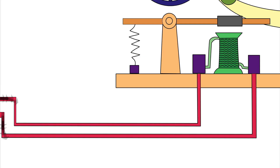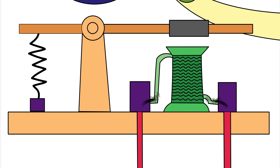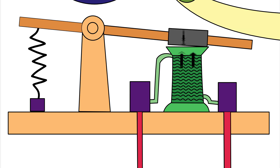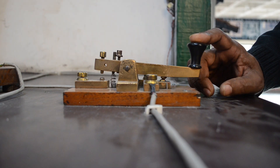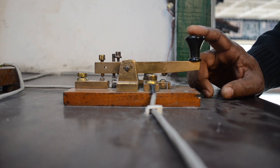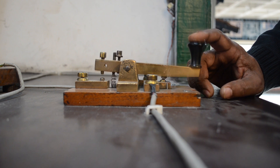It can be transmitted as electrical pulses along a telegraph wire, as an audio tone, a radio signal with short and long tones, or as a mechanical, audible, or visual signal using various devices. It can be directly understood by a skilled listener or observer without special equipment.